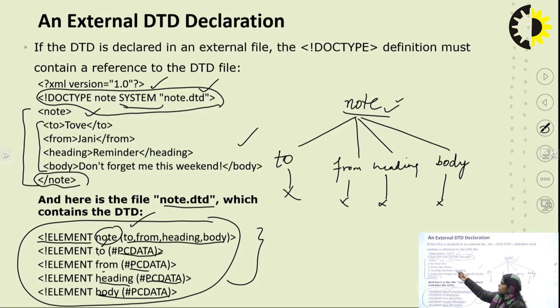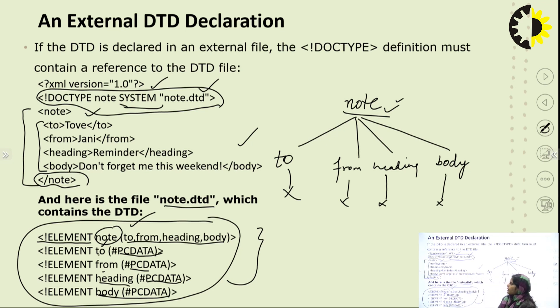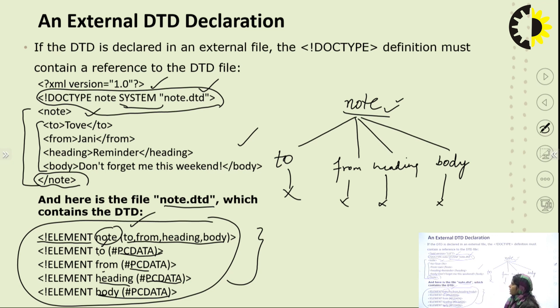In this example, the 'to' element has value 'reminder' for the heading, and the body part contains the textual data: 'do not forget me this weekend'.